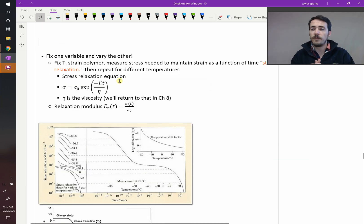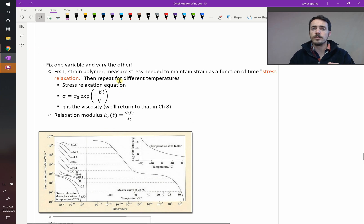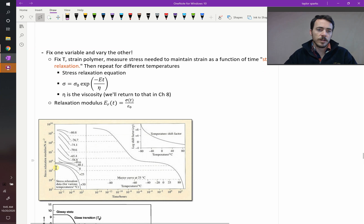So for example, you might fix temperature, do everything at the exact same temperature, but then strain the polymer at different strain rates. Or you could go the other way. You could strain them at the exact same rate, but do it as a function of a bunch of different temperatures. And what you'd get is something like this. So here they're showing the stress relaxation modulus. So the modulus is just the stress as a function of time divided by your strain. So it's just Young's modulus. They've just solved for Hooke's Law over here, but they're doing it as a function of time.